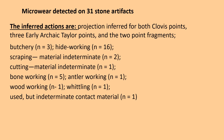Three of the tools showed butchery. Sixteen showed hide working. Two showed scraping with an indeterminate material. One showed cutting. Five showed bone working. One showed antler working. One showed woodworking. One showed whittling. And one was used, but they couldn't tell what material it was used against.